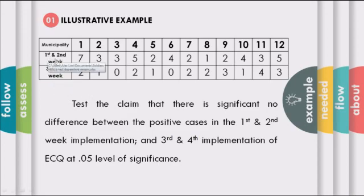We do have the first and second week, the number of positive cases after the implementation of the ECQ: 7, 3, 3, 5, 2, 4, 2, 1, 2, 4, 3, and 5. On the third and fourth week, we do have 2, 1, 0, 2, 1, 0, 2, 2, 3, 1, 4, and 3.